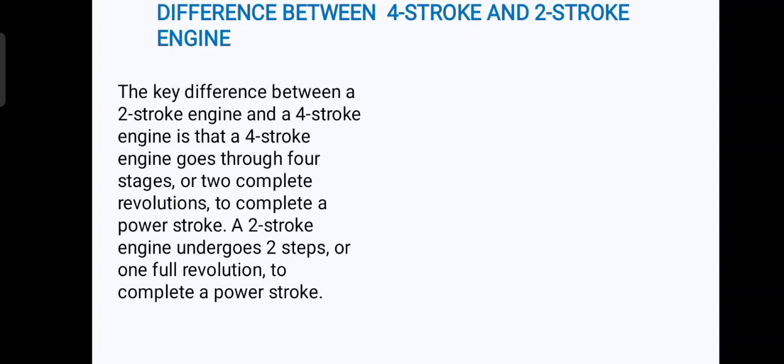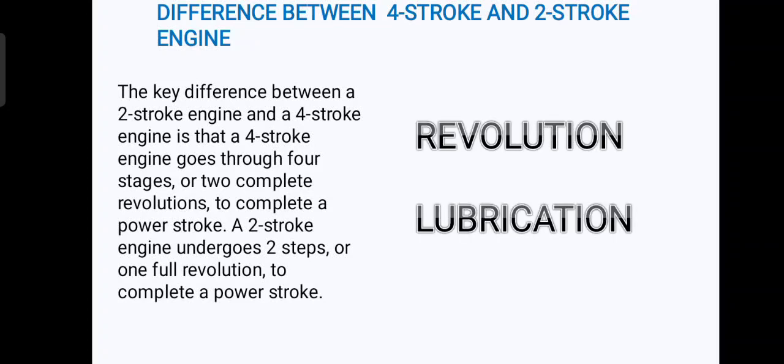The main difference between a two-stroke engine and a four-stroke engine is that a four-stroke engine goes through four stages or two complete revolutions to complete a power stroke, while a two-stroke engine undergoes two steps or one full revolution to complete a power stroke. So in summary: four-stroke requires two revolutions of the crankshaft, while two-stroke requires only one revolution of the crankshaft.